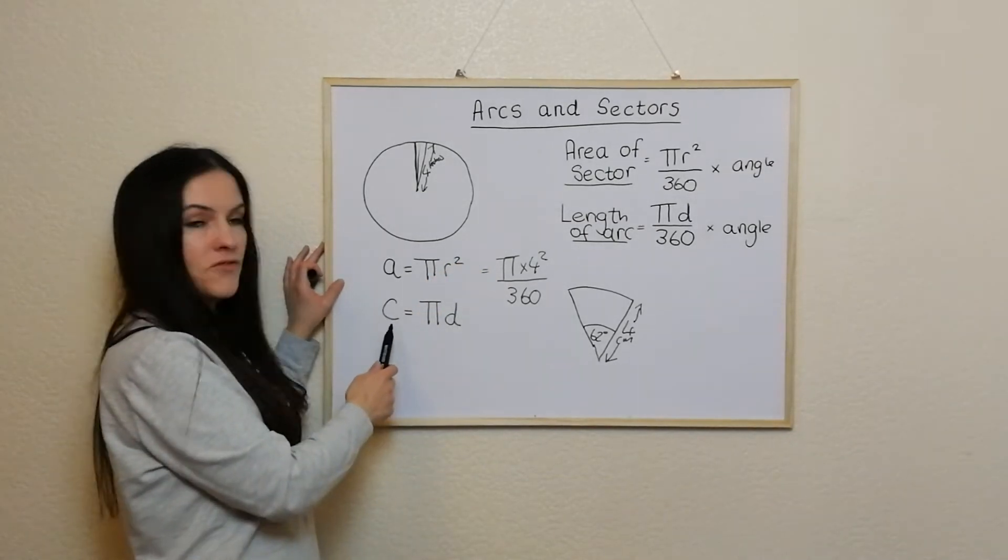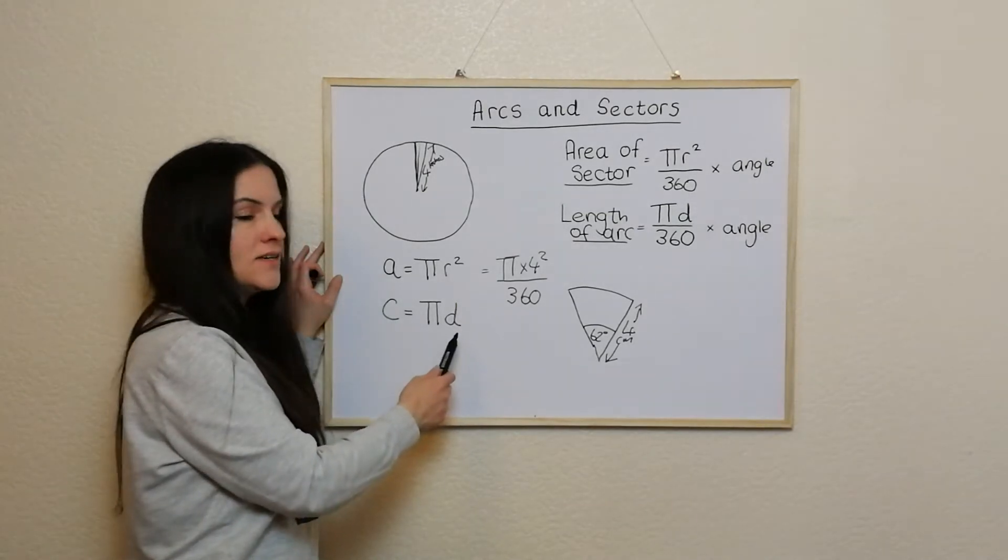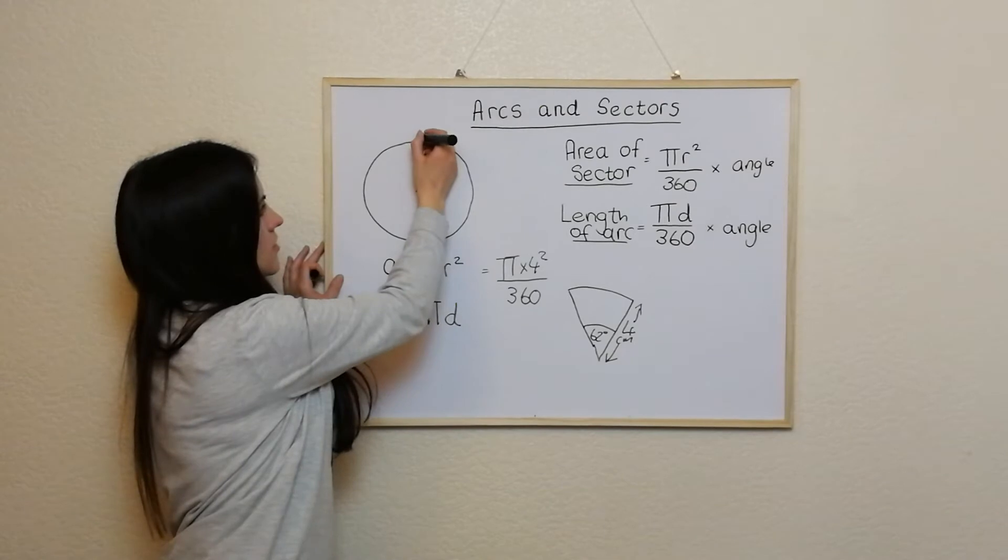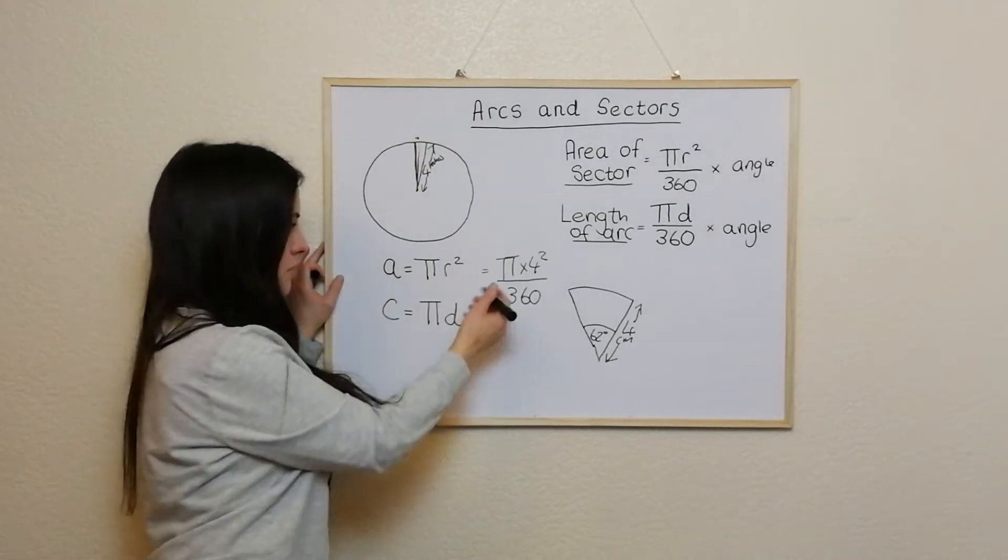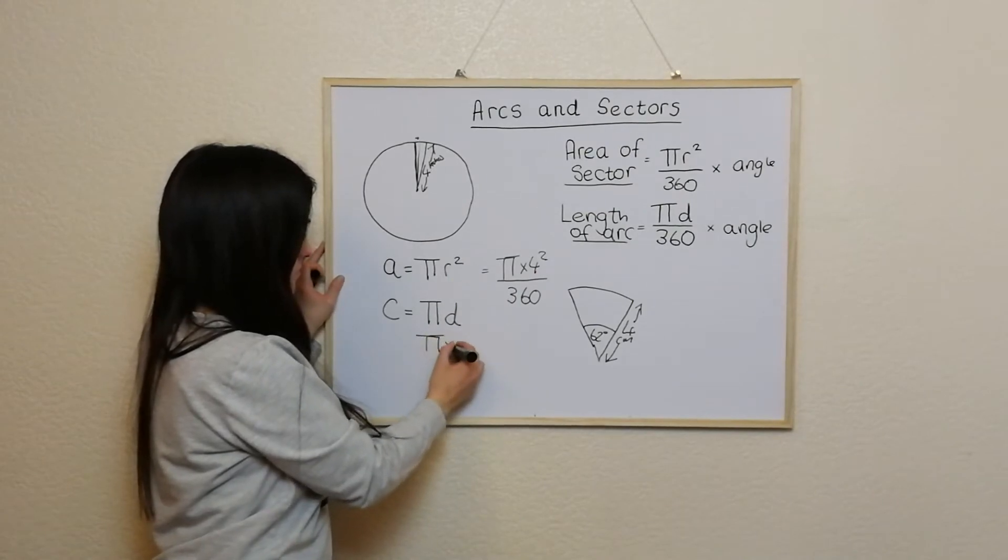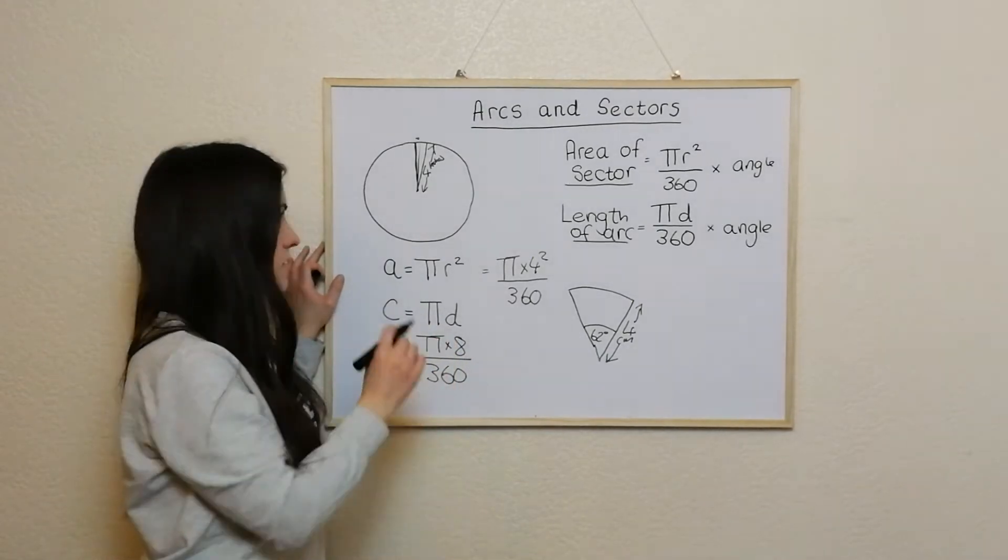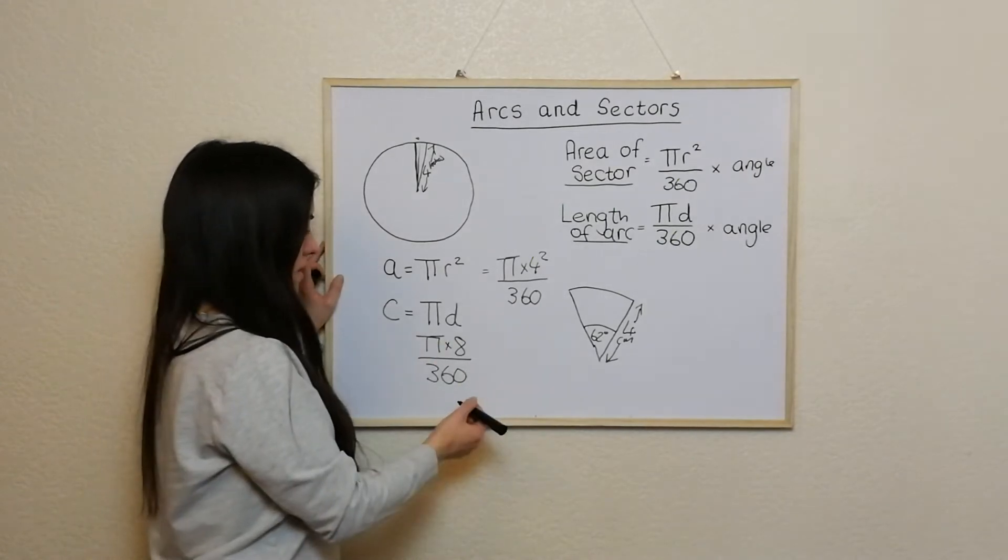So if you've got the circumference, if you're working out the circumference, normally you just do pi d. But if we want to know, say it was just a little bit like one degree there, you would do pi d or pi times 8, divide it by 360 to get one degree, the length of the arc one degree, and then just times it by the angle you want.